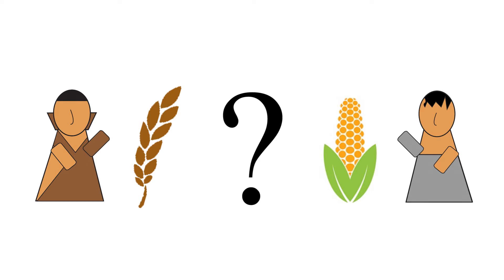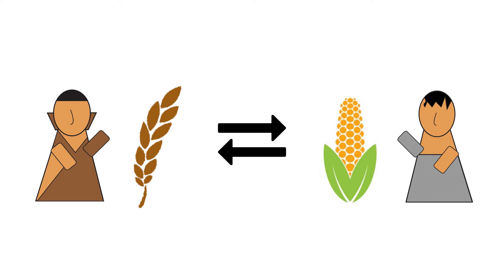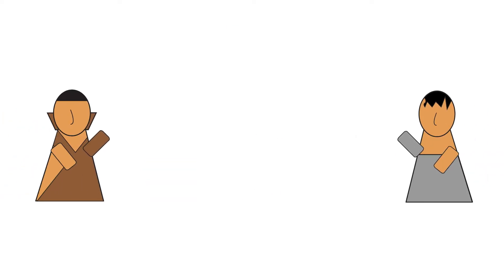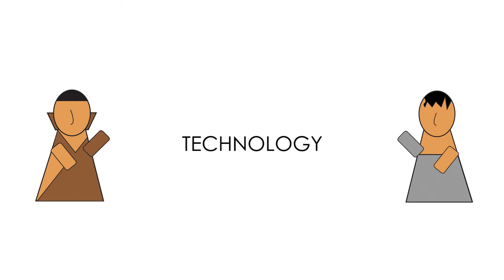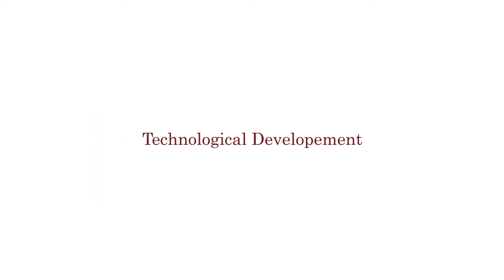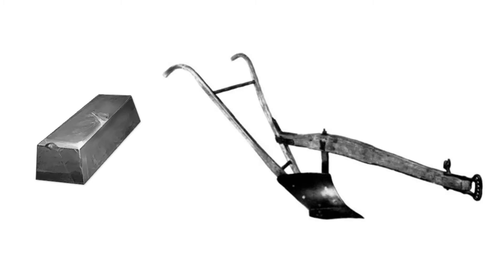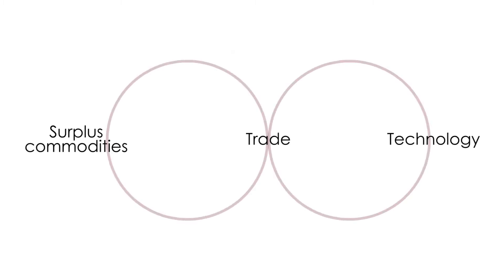What do they both do with their extra grain? They exchange it with each other, which leads us to factor number two. When people trade, they trade not just goods, but also each other's ideas about religion, art, and technology — technology being factor number three. Technological developments like the discovery of iron led to sophisticated machinery like a better plough, which leads us back to the first factor.